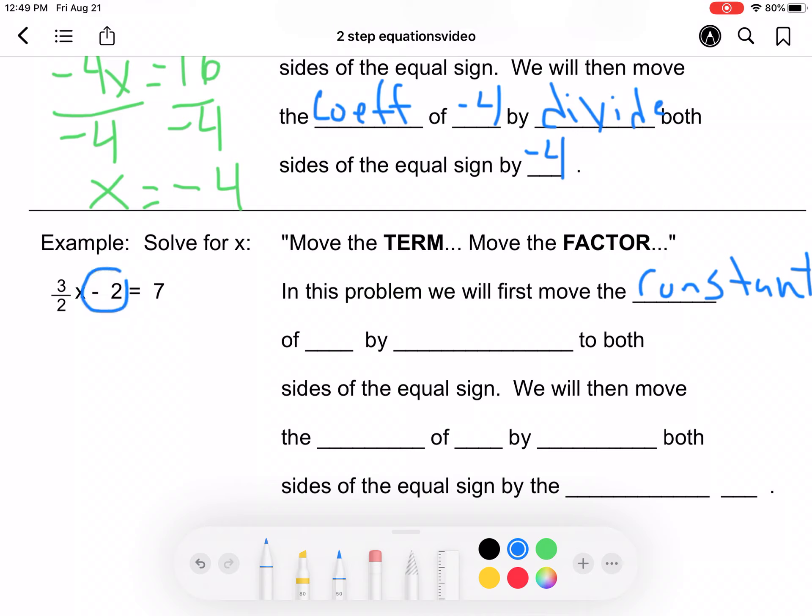The constant here is negative 2. How will we move that? We will add. So let's go ahead and add 2 to both sides. So I'm left with 3 halves x is equal to 9.